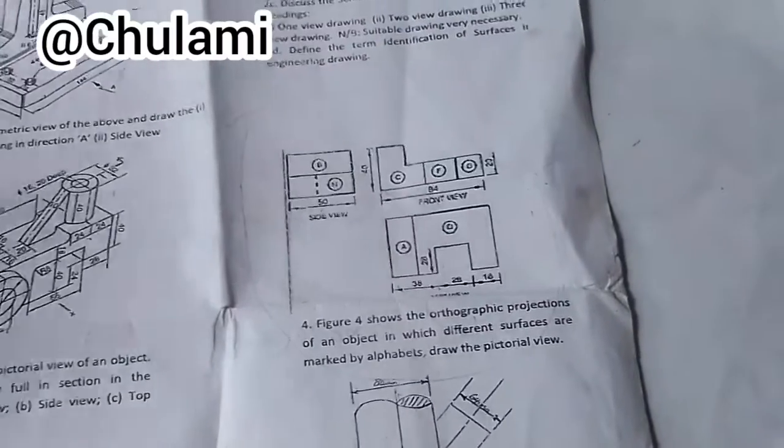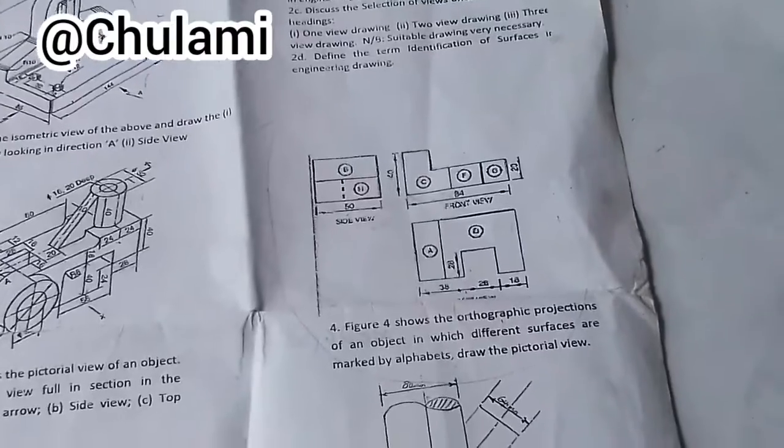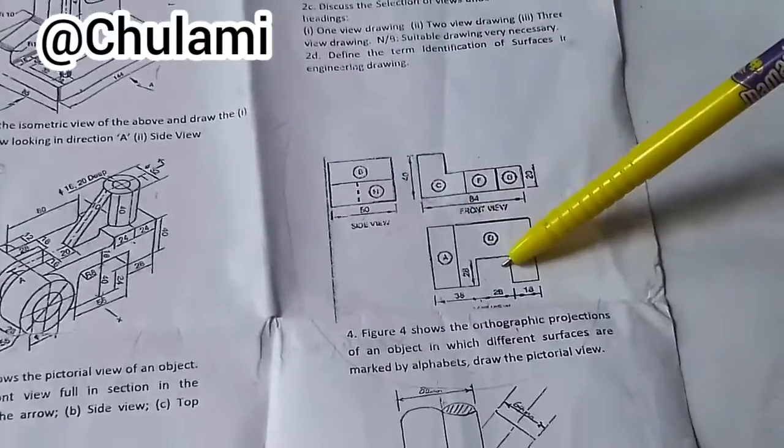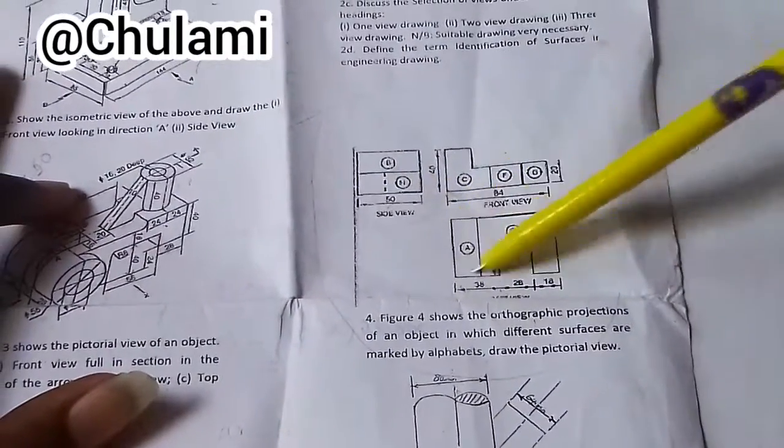Hello guys, in today's video we'll be drawing an isometric block. They're giving us a view. This is a side view, front view, and this is a top view. So we'll assemble this view together to get the full isometric block.